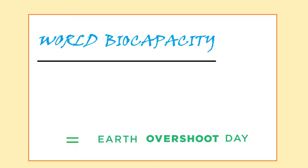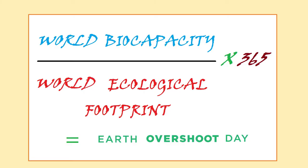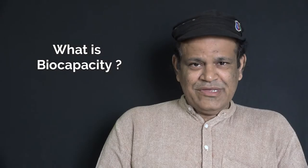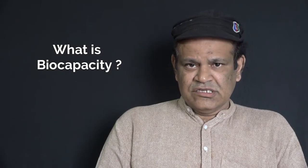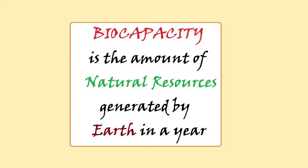Earth Overshoot Day is calculated using the formula: World Biocapacity divided by World Ecological Footprint, multiplied by 365 — the number of days in that year. World Biocapacity is the amount of natural resources generated by Earth that year, while the Ecological Footprint is humanity's consumption of Earth's natural resources for that year.